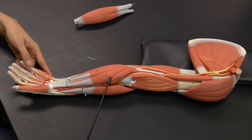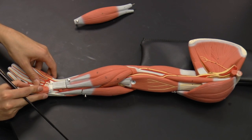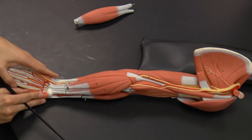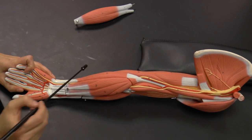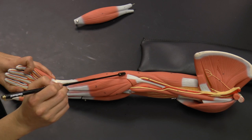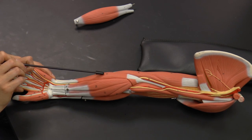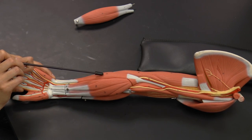If we have a flexor carpi radialis, it's probably likely that we also have a flexor carpi ulnaris attached to the pinky side along the ulna. So here you can see that muscle here, the flexor carpi ulnaris.